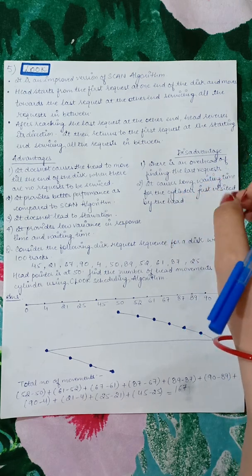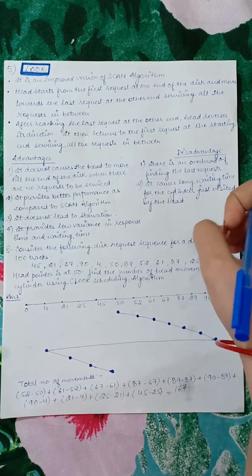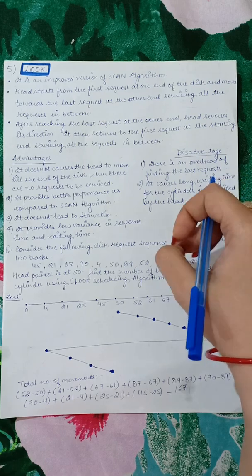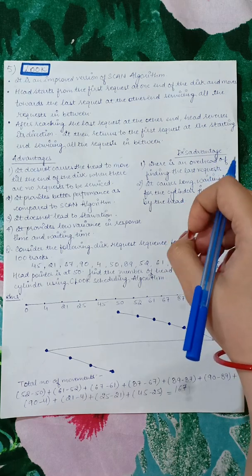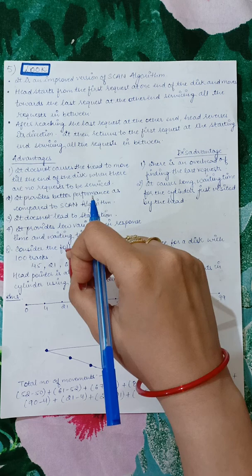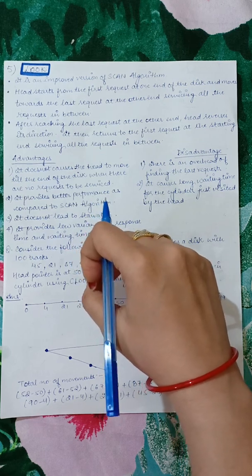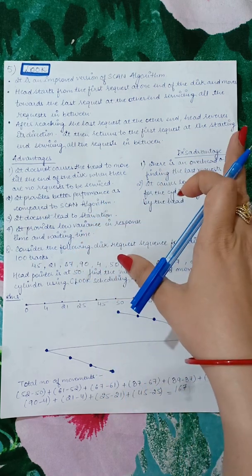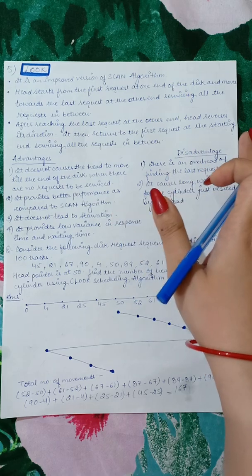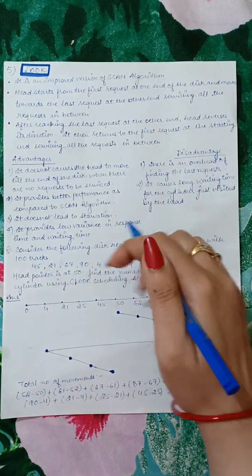After reaching the last request, the head will reverse its direction and return to the first request at the starting end, servicing all the requests in between. This is the concept of the LOOK algorithm, and its advantages and disadvantages follow.